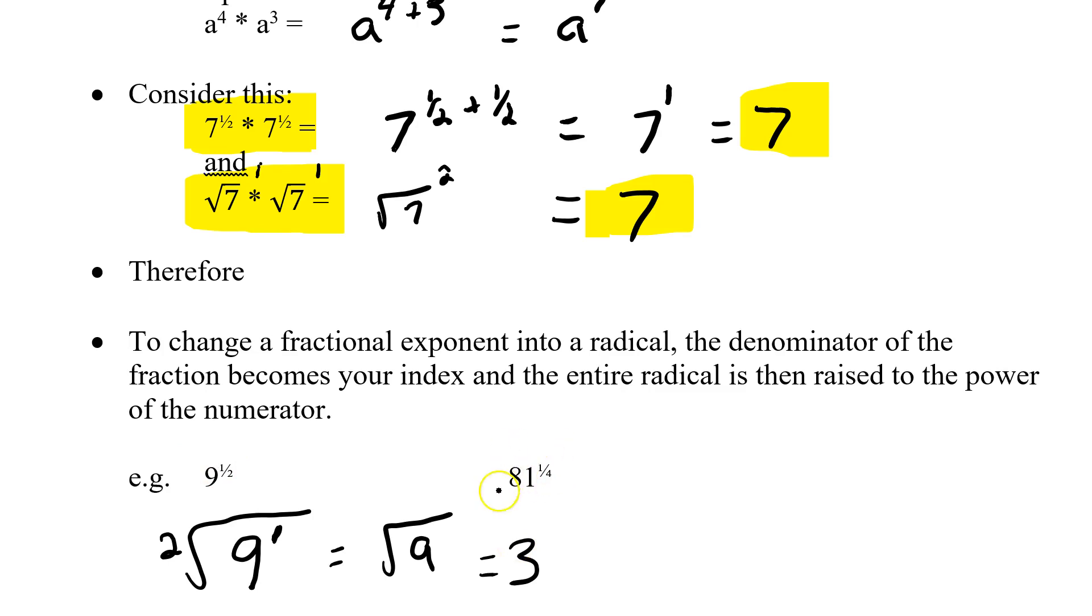Let's try another one. 81 to the 1 quarter. So I start with my base, 81. Open up the root sign. Now the index comes from the denominator, which is 4. And the base gets the power of 1. So I essentially have 4th root of 81. Now what number times itself 4 times is 81? Well, pull the calculator, and we find out that it's 3. So the 4th root of 81 is 3. 81 to a 1 quarter exponent is 3.